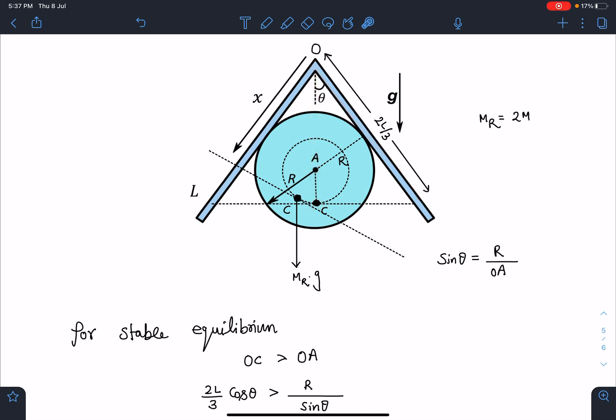OA is this distance. So you can see this right angle triangle here. OA sin theta is R, so OA sin theta is R. So I can write OA is R by sin theta.